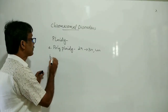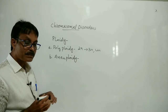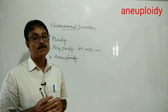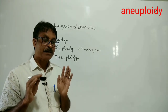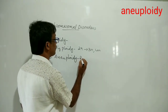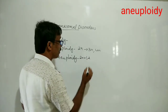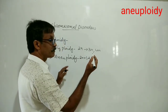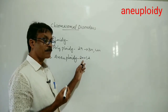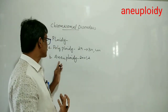The second type is aneuploidy. Aneuploidy is the change in the total number of chromosomes. The total normal number is 2n. If one chromosome is increased or decreased from this number, that condition is called aneuploidy — a change in the total number of chromosomes either by increasing or decreasing one or two chromosomes.